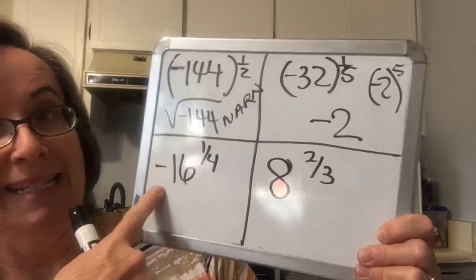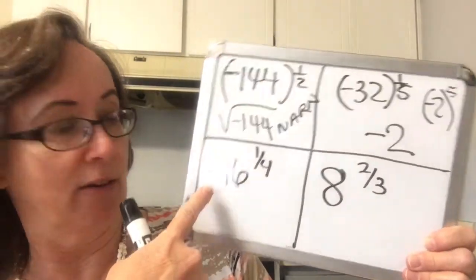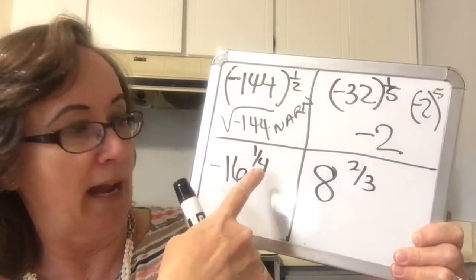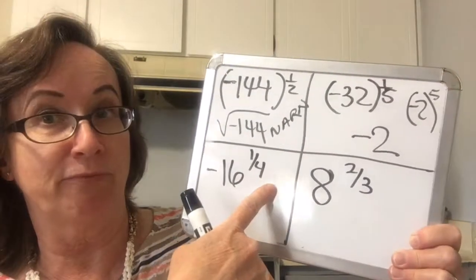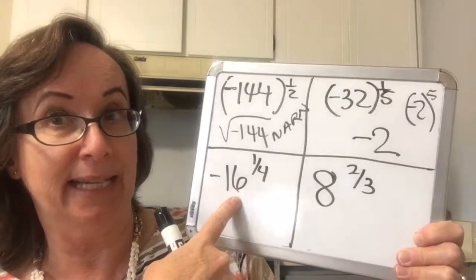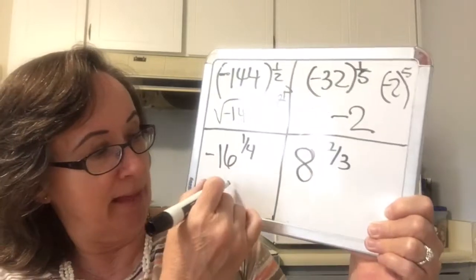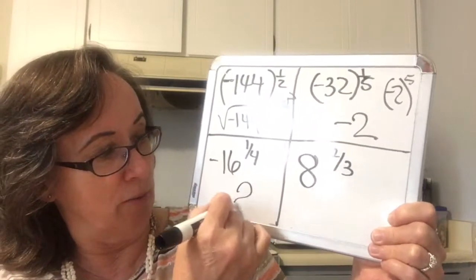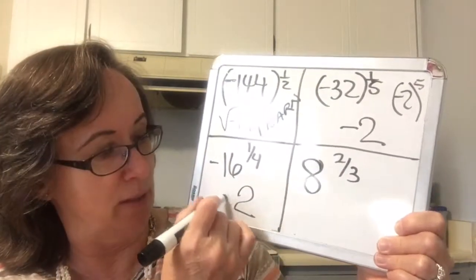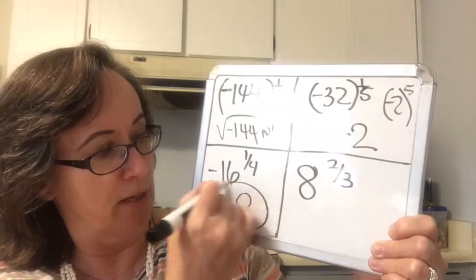This one has the negative outside — there is no parenthesis. Therefore I can take the fourth root of 16 and make that 2, and then tack on negative 1 times 2 to get negative 2.